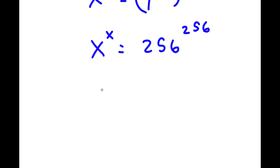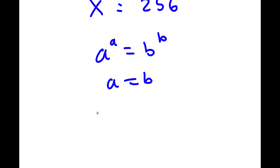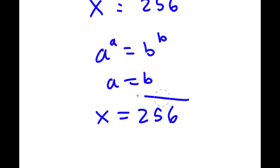Now, if I have something in the form a to the power of a is equal to b to the power of b, this means that a is equal to b. So in this case, x is equal to 256.